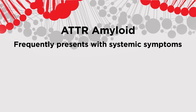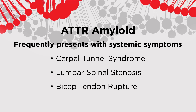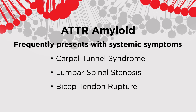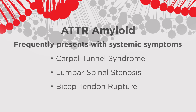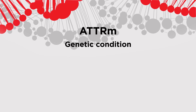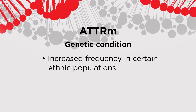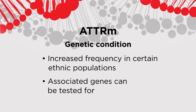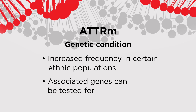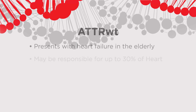ATTR amyloid frequently presents with systemic symptoms, although they're not always identified by clinicians. We know that patients who have ATTR amyloid frequently have bilateral carpal tunnel syndrome, lumbar spinal stenosis, or bicep tendon rupture. ATTR mutant type is a genetic condition that is seen with increased frequency in certain ethnic populations, and certain genes have been identified which can be tested for in patients identified as having ATTR cardiac amyloidosis.